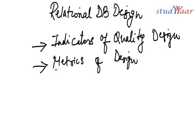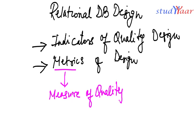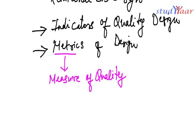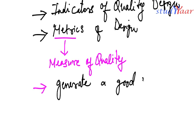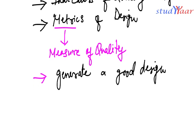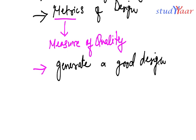Metric means a measure of quality. We are going to understand how to generate a good design from a bad design. First we will understand what a bad design is, and then we will understand how to transform a bad design into a good design.